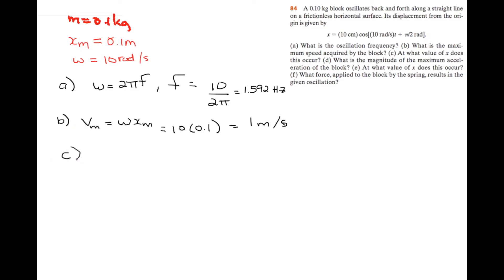c. At what x value does this maximum speed occur? We know that the maximum speed always occurs when there's zero displacement. So this is at x equals 0.